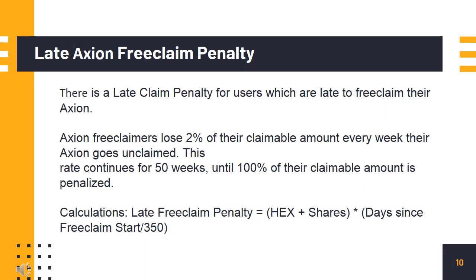Late Axion free claim penalty: There is a late claim penalty for users who are late to free claim their Axion. Axion free claimers lose 2% of their claimable amount every week their Axion goes unclaimed. This rate continues for 50 weeks, until 100% of their claimable amount is penalized. Calculation — late free claim penalty equals: HEX shares × (days since free claim start / 350).